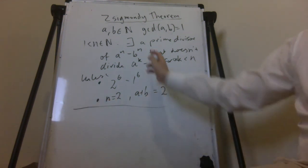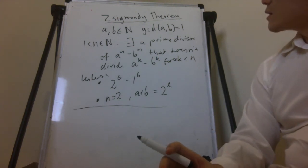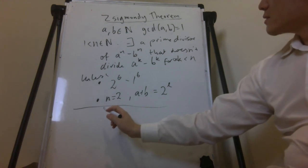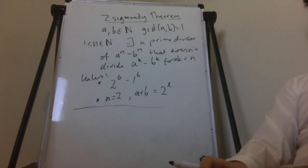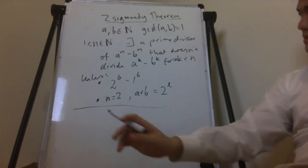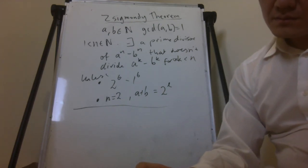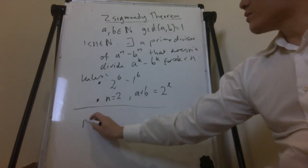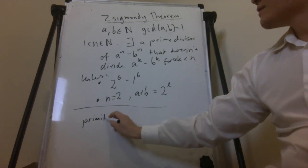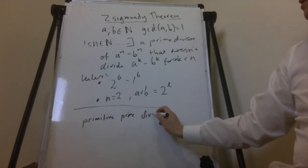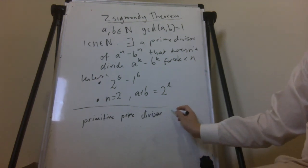So the prime that exists, there's actually a name for it. If you have a sequence, there's a primitive prime divisor of a sequence. So it's a primitive prime divisor of the sequence a to the n minus b to the n.